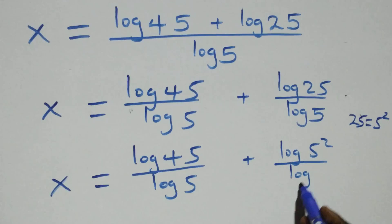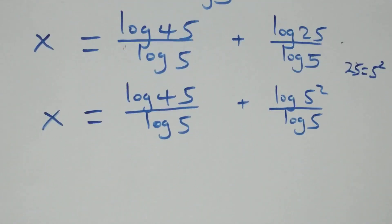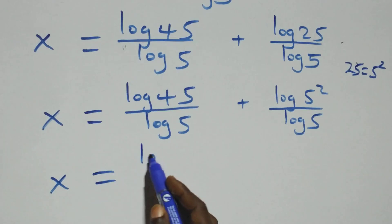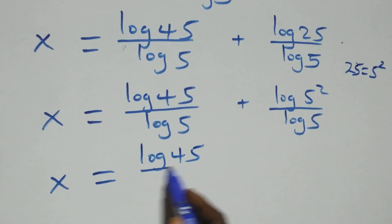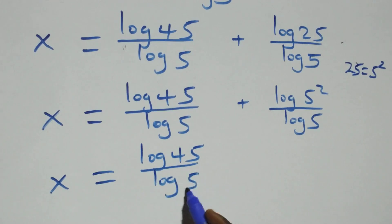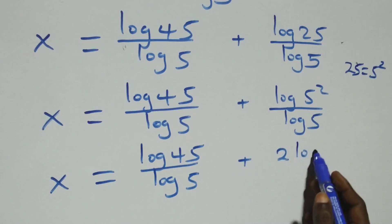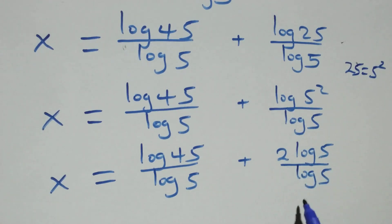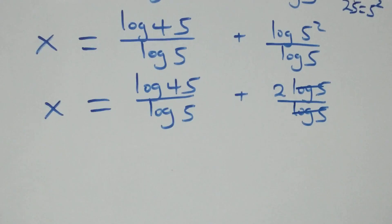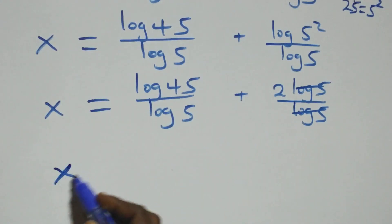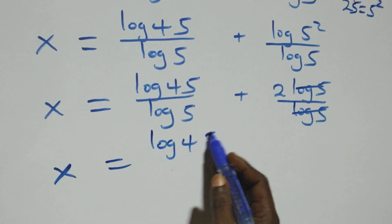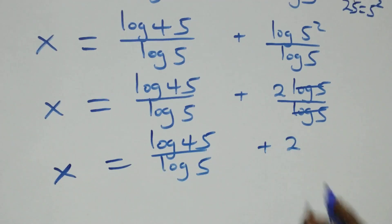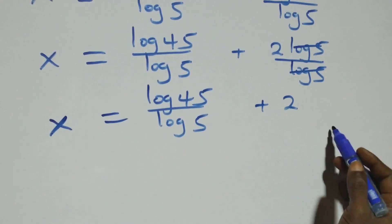The next step: we apply the power rule of logarithms — the 2 comes out front. So what we have becomes x equals to log 45 over log 5 plus 2 log 5 over log 5. Then log 5 cancels each other and we have 2 left, so x equals to log 45 over log 5 plus 2.